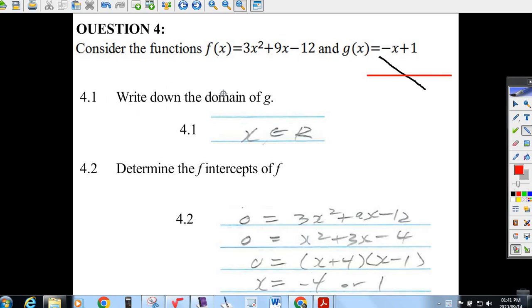The first question is: write down the domain of g. That's all the things that x can be. This is a line that's going downhill because it's got a minus x here. If this is the x-axis and this is y, this line goes forever, all the way down, all the way up. What are all the things that x can be?